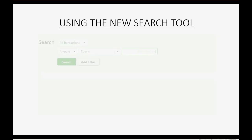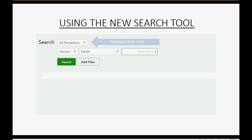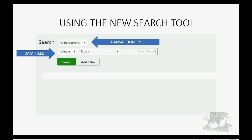When you open the advanced search tool, it first asks for the transaction type — that's the top pull-down menu. The transaction type determines which data fields are available, because different transaction types have different fields. Once you choose the data field, you then tell QuickBooks Online what content that field must contain in order to present the matching transaction in the search results list.